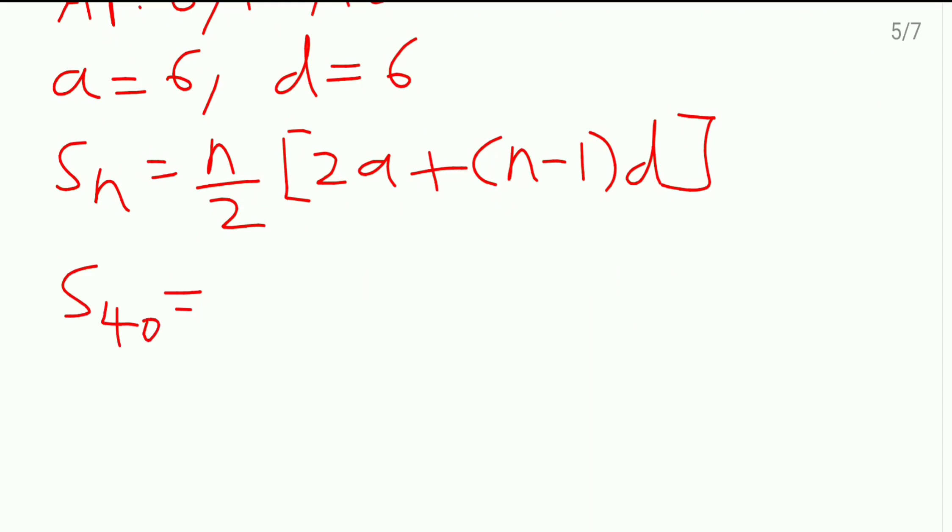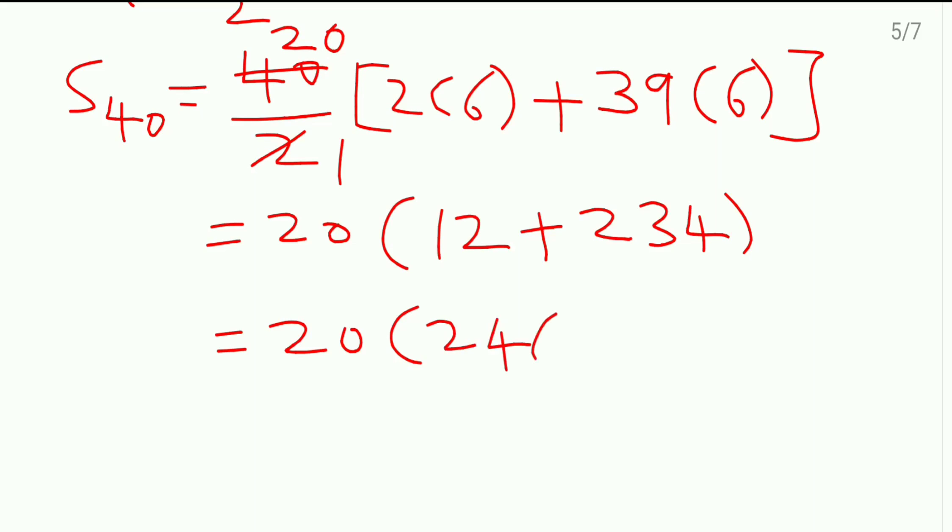We will do the addition now. 20 times the addition of these two numbers, which comes as 246. Finally, 20 into 246 comes as 4920.